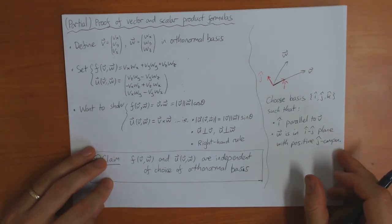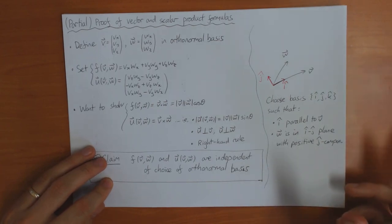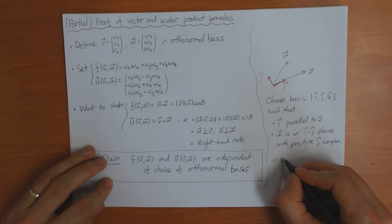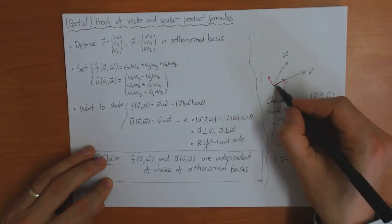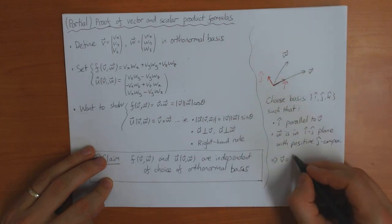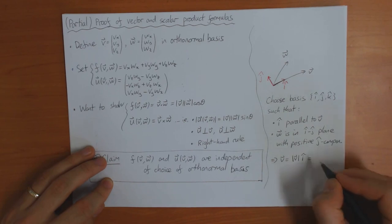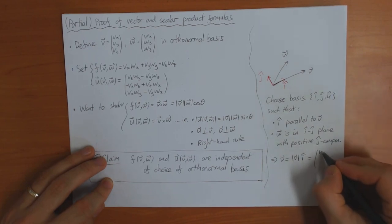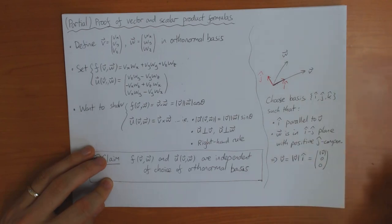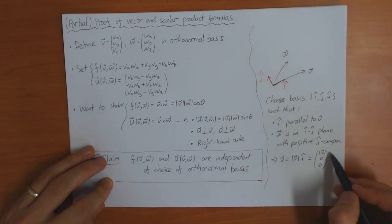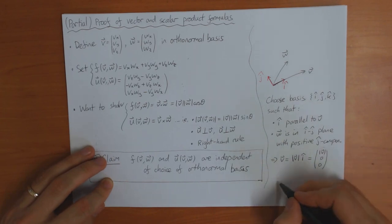Okay. So that makes this problem much simpler, you see, because then we know that v is just equal to parallel to i, so it must just be equal to the length of v times the basis vector i. So as a vector, then this is length of v, zero, zero. Because it points in the direction of i and it has length equal to the length of v.